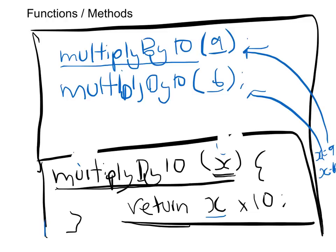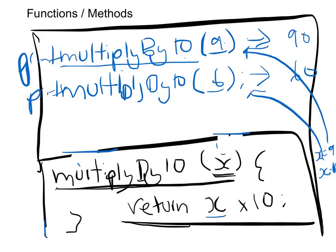One thing to notice: this program still won't do anything if I run it — it won't give me any output. Think about why. We've got the function defined, and we've got our two function calls, but nothing else happens. It's because we're not printing anything out to the user. We said 'multiplyByTen(9)', but where did we say we're going to print the answer? We didn't. So we need to add a print statement — that line will print out 90, and the other will print out 60.